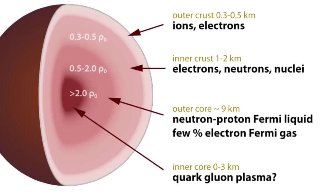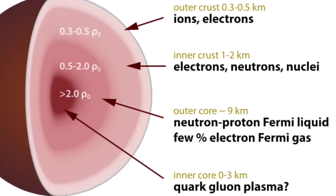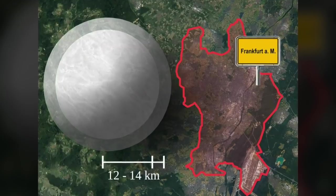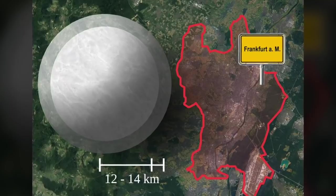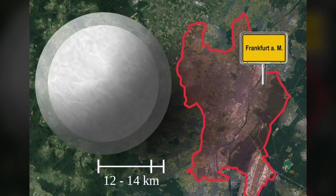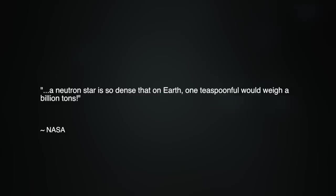which forms when the material from a supernova explosion of a massive star collapses gravitationally. The average neutron star is thought to be around 10 to 20 kilometers in radius, yet supposedly has about one and a half times the mass of our Sun. As described on an official NASA webpage, a neutron star is so dense that on Earth, one teaspoonful would weigh a billion tons.